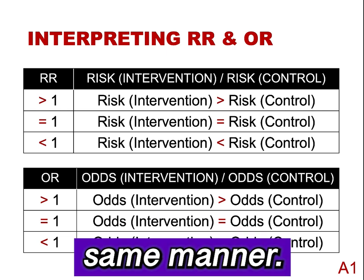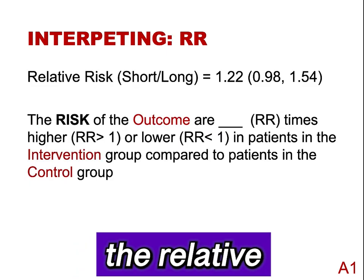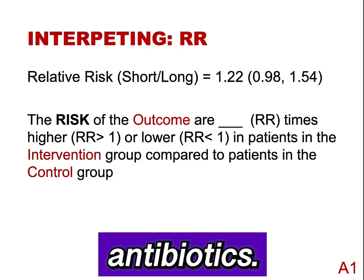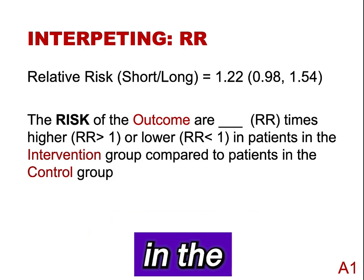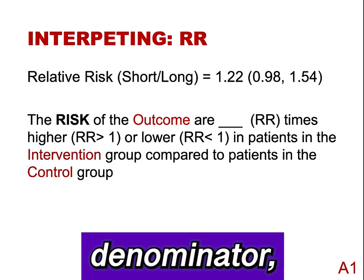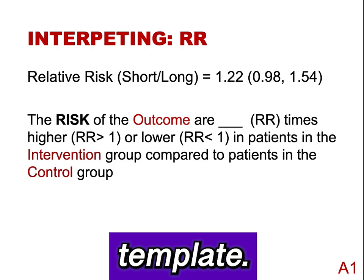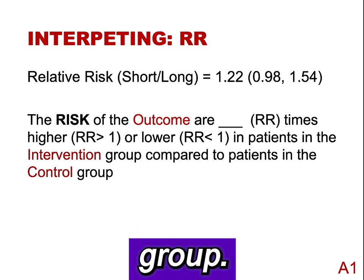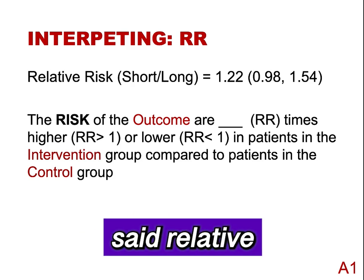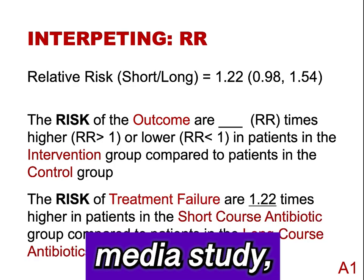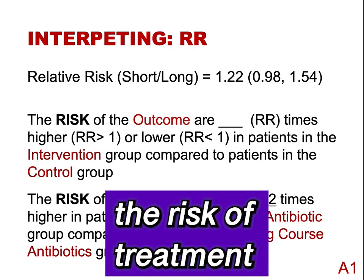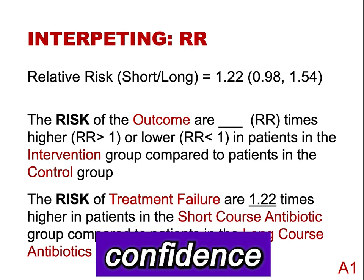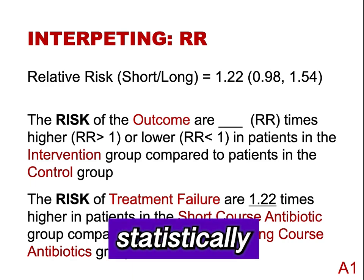Odds ratios are interpreted in the same manner. Let's express the relative risk in a sentence using parameters from a study of otitis media treatment failure comparing a long to a short course of antibiotics. The relative risk of treatment failure with a short course of antibiotics in the numerator and a long course in the denominator was 1.22. Using the template — a patient in the intervention group was X times more likely to have an outcome than the patient in the control group — for the otitis media study: a patient in the short-course antibiotic group had a risk of treatment failure 1.22 times higher than a patient in the long-course antibiotic group. The confidence interval for the relative risk includes 1, indicating that there was not a statistically significant difference.